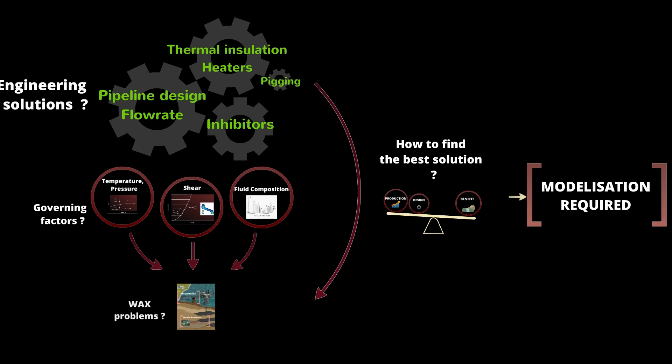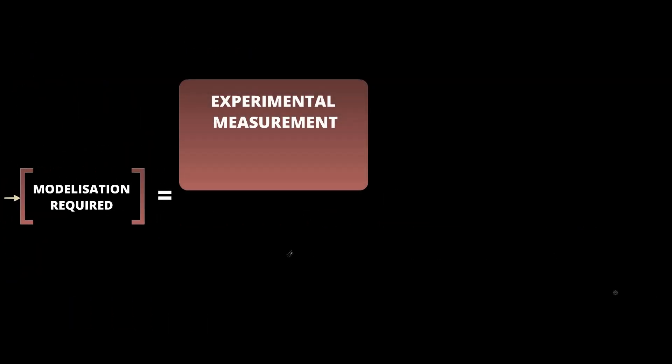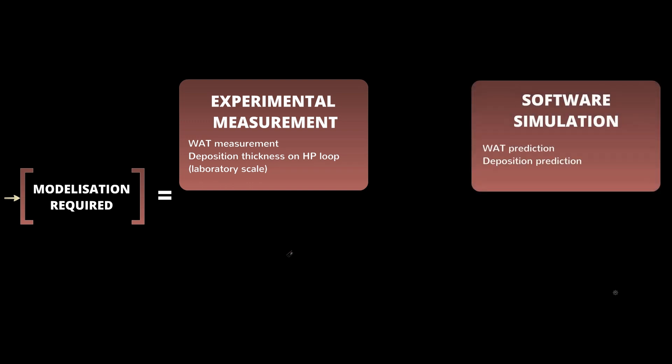As with any technical problem, modelization consists of two main steps. On the one hand, the experimental measurements must provide reference properties such as wax appearance temperature and deposition thickness according to flow conditions. On the other hand, a numerical simulation should help to predict these properties. Flow assurance and phase behavior of waxy crude oil may be predicted. However, the prediction of these properties is very difficult. That is why quality experimental data are critical to tune the model.